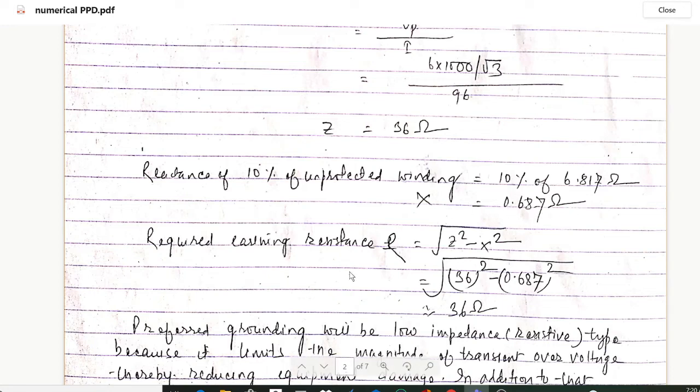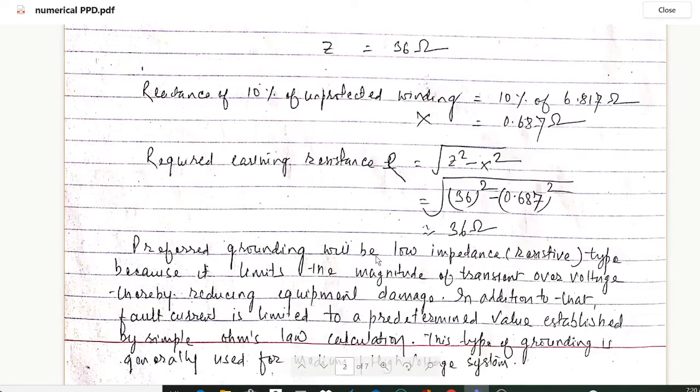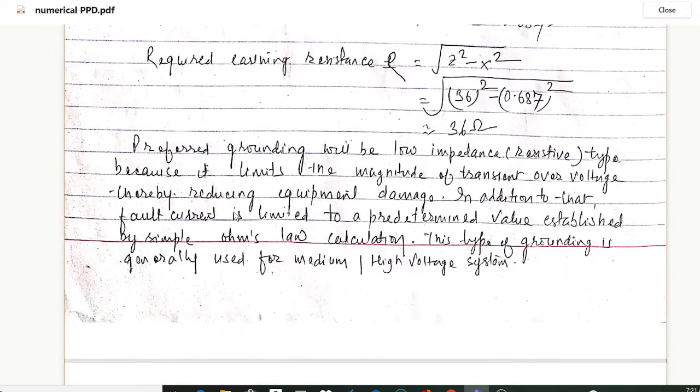Now required earthing resistance: since we need to calculate the required earthing resistance according to the question, it will be root of Z squared minus X squared. We have obtained the value of Z as 36 ohms and the value of X is 0.687 ohms, so the value of R will be 36 ohms. Now at the conclusion we can write here: